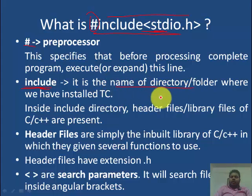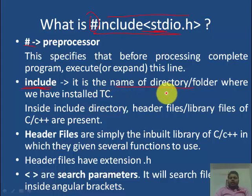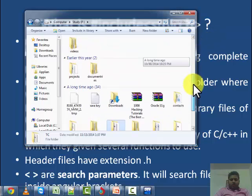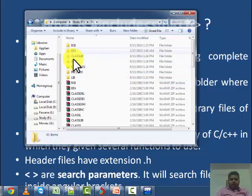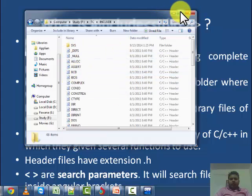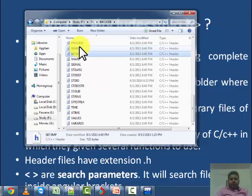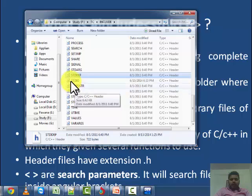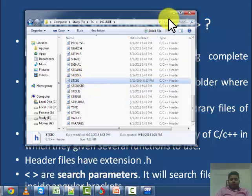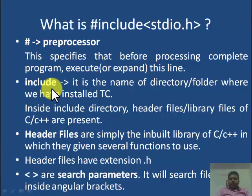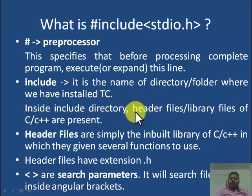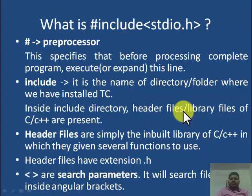The next is 'include'. Include is the name of the directory — the name of the folder where we have installed TC. Here is my TC folder — the include folder is there, and it contains a file named stdio.h. So 'include' refers to the directory or folder where we have installed TC; inside the include directory, header files or library files of C and C++ are present.